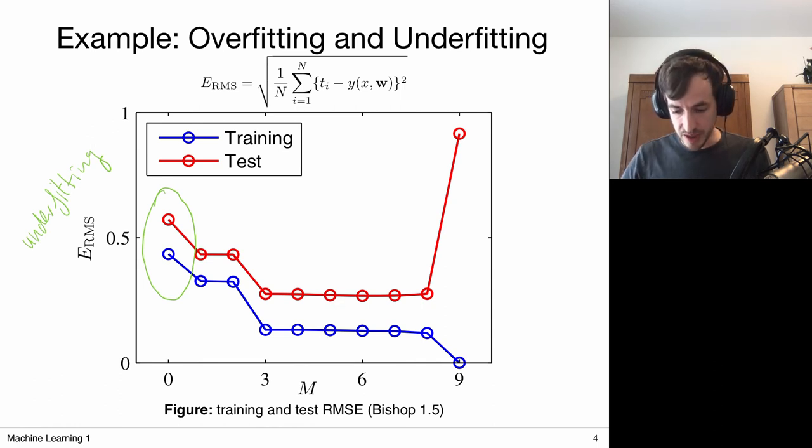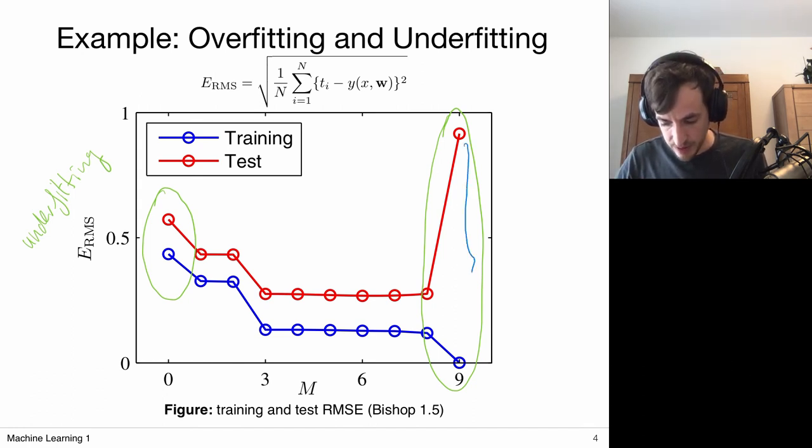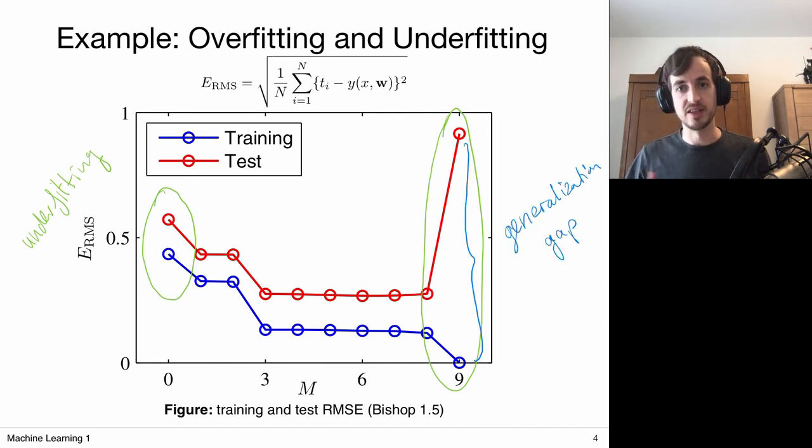Then on the right hand side of this plot, something interesting starts to happen again. Now the train error and the test error start to deviate from one another. And this is really important sign that you should watch out for. So this gap that you see over here is called the generalization gap. So it's the gap between the train and test error. And obviously we want this generalization gap to be as small as possible. Because then it means that my training error is representative of my test error. And we know that my model is going to generalize quite well. But if it starts to deviate from one another, then I cannot make such statements anymore.